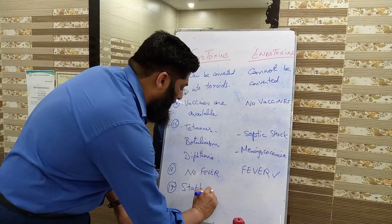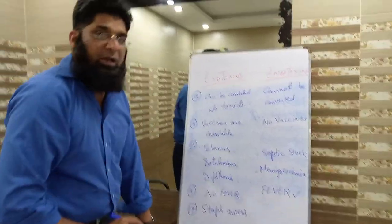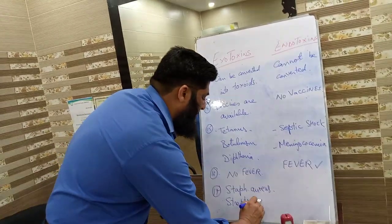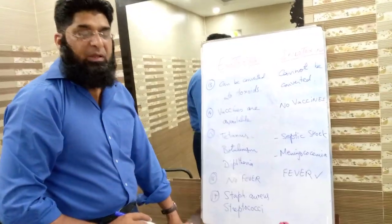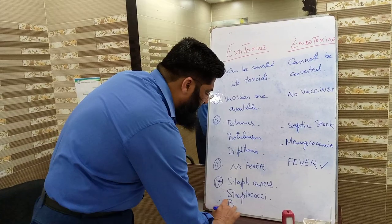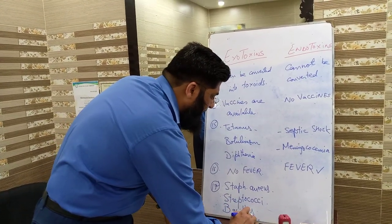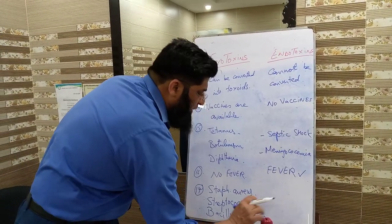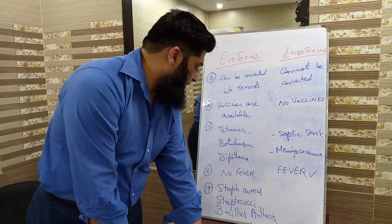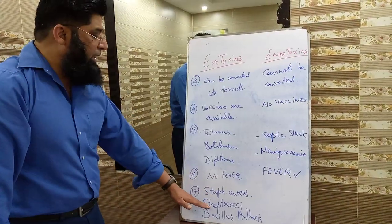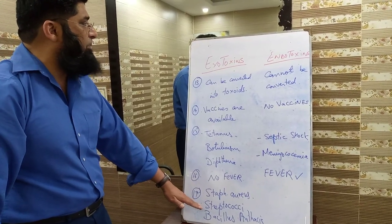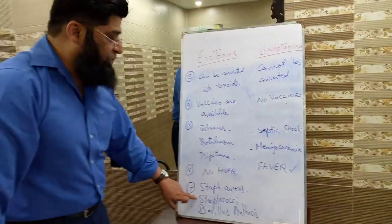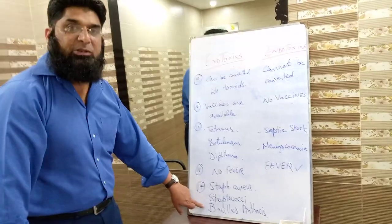Examples of bacteria excreting exotoxins include Staphylococcus aureus, Streptococci, and Bacillus anthracis. These three bacteria are clinical examples of microorganisms that excrete exotoxins.